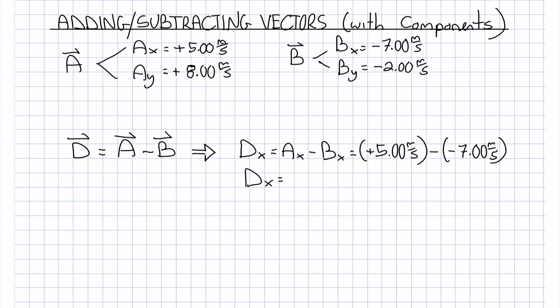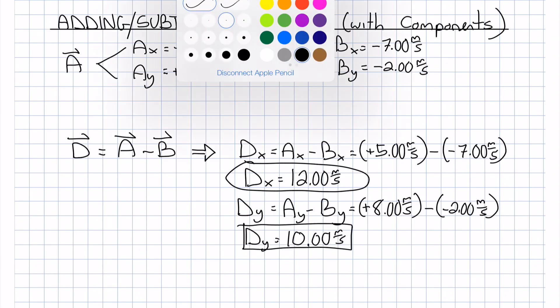And so those two negative signs will cancel and we'll end up with 12.00 meters per second. Dy is handled in a similar way: Ay minus By, which will give us plus 10.00 meters per second.